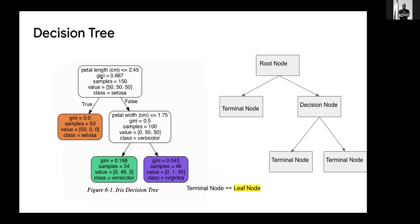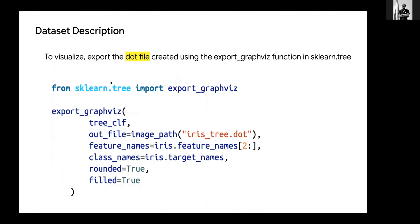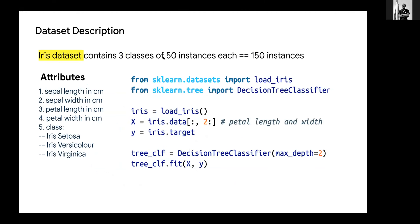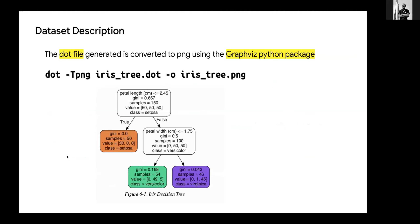The sample size from the beginning: we have 150 instances in three classes — 50 for Setosa, 50 for Versicolor, and 50 for Virginica — so 150 samples altogether.